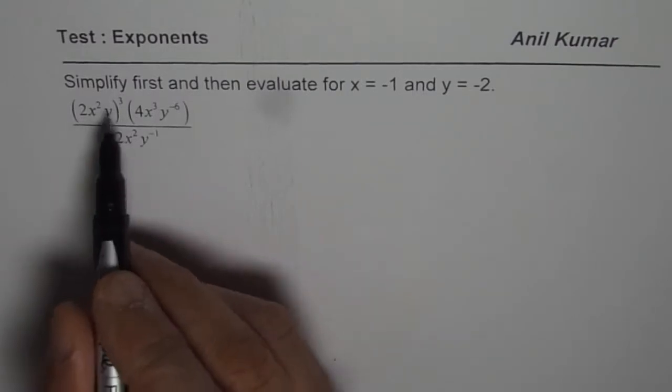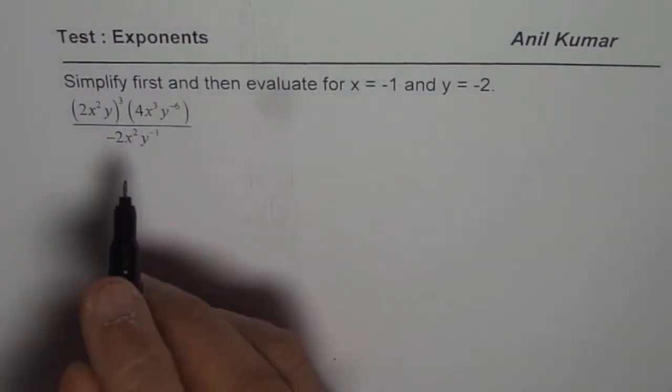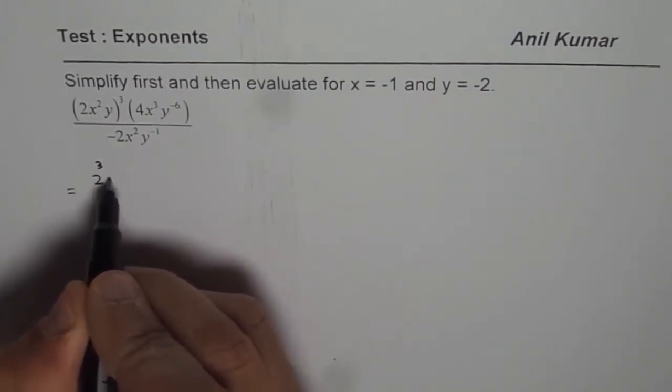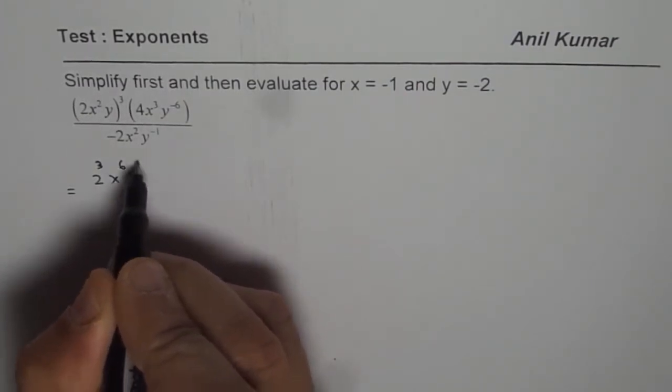So let's do them individually first and then we'll club them together. Taking care of cube here, we could write this as 2 cubed x to the power of 6 y cube.